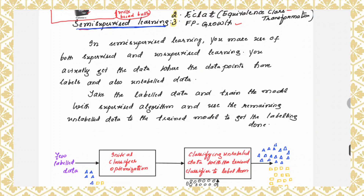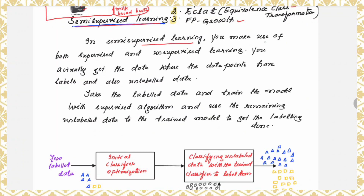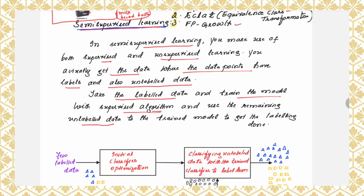You should also know briefly about semi-supervised learning. In semi-supervised learning, we make use of both supervised and unsupervised learning. We get data where some data points have labels and also data that is unlabeled. The procedure is: take the labeled data and train the model with any supervised algorithm, then use the remaining unlabeled data with the trained model to get the labeling done.